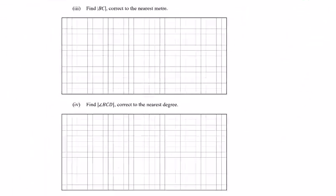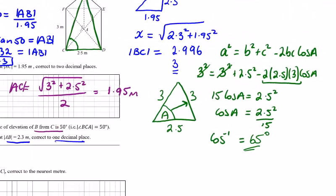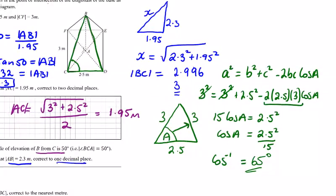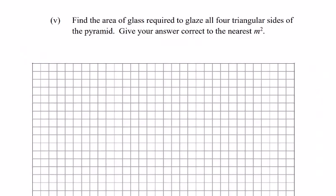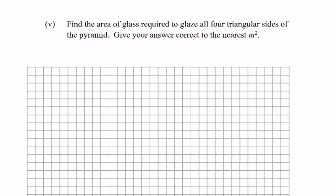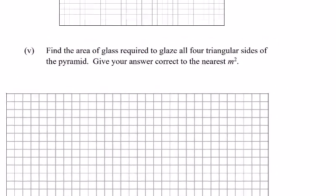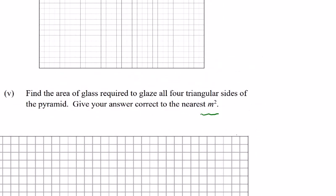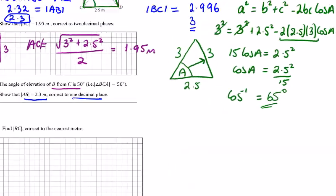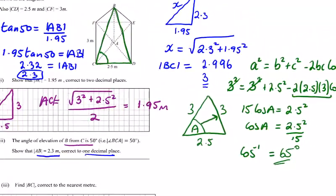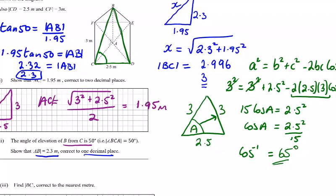It is to the nearest degree. The next part of this question: we're asked to find the area of glass required to place all four triangular sides to the nearest meter squared. Area of a triangle, let's have a look. Half AB sin C will give us area of a triangle.